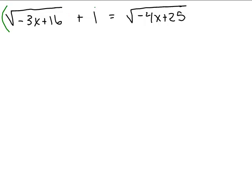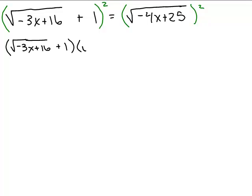Let's square the entire left side and the entire right side. Now you have to be careful here — on the left side I have a binomial. On the right side, when I square a square root, I just get what's underneath the square root sign. So the right side will simply be negative 4X plus 25.